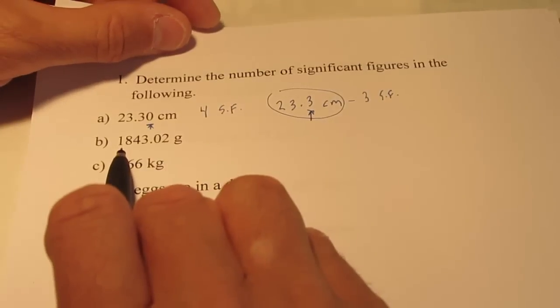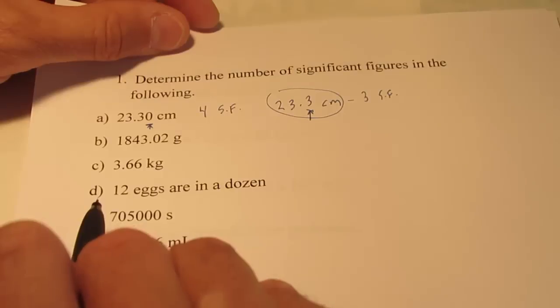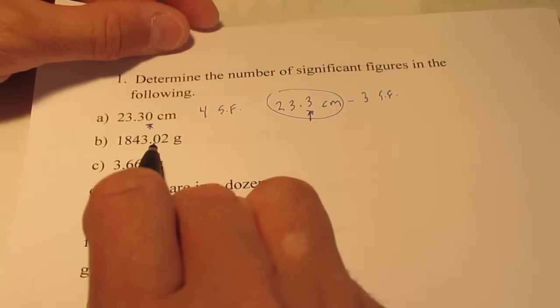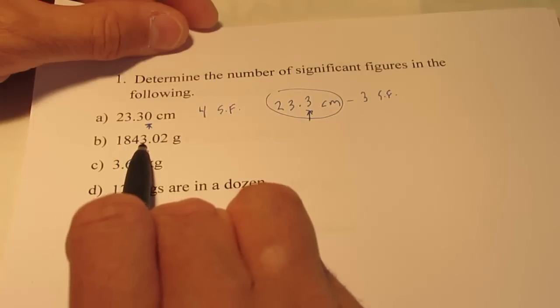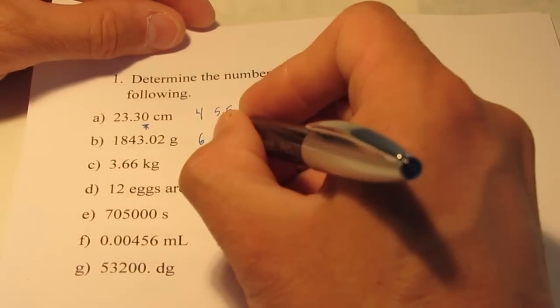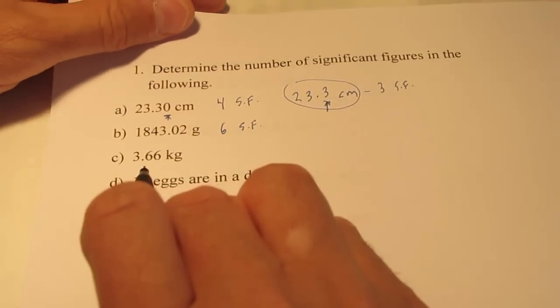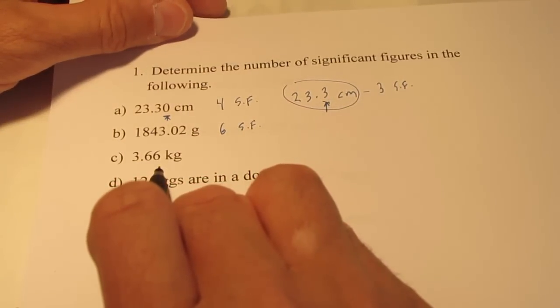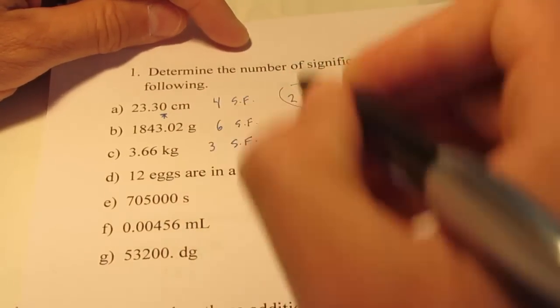Let's do a few more. How about this guy right here, 1843.02 grams. Now that's a zero between non-zero digits. And we said, I think that was our first rule, those are always significant. So this measurement has one, two, three, four, six significant figures. How about 3.66 kilograms? Well, that's pretty easy, that has three significant figures.